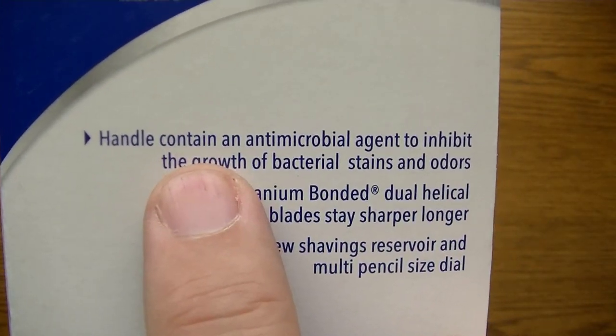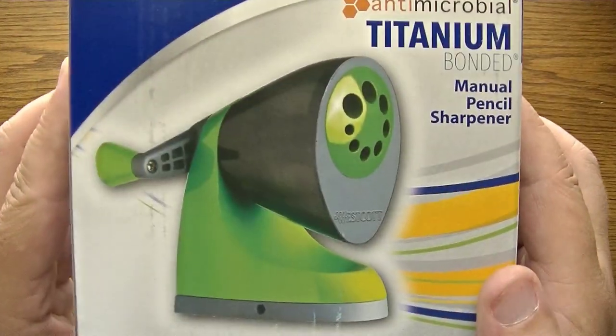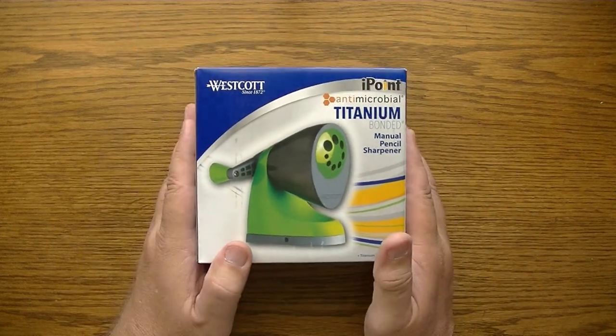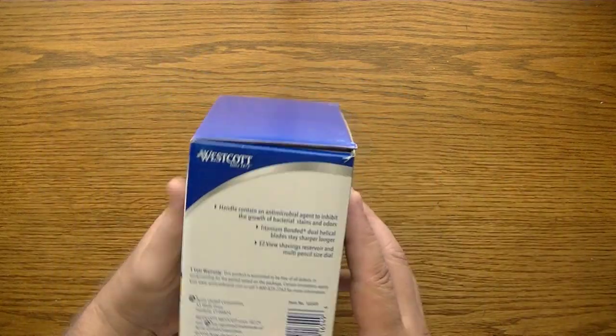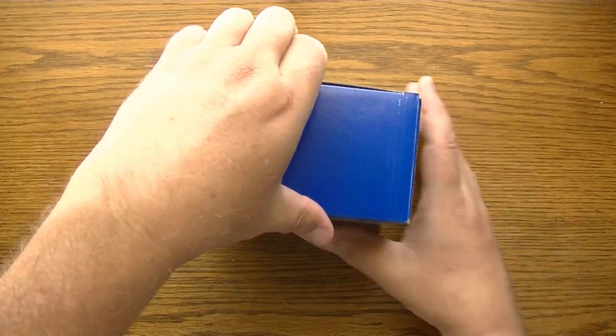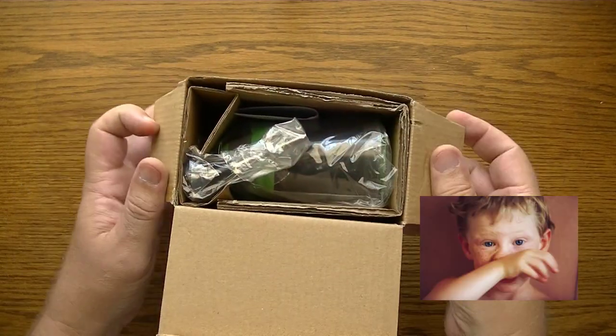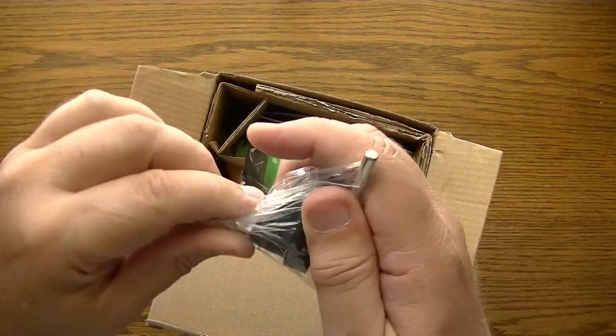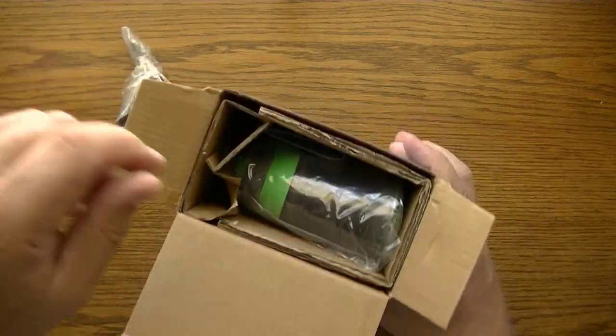It tells us the handle contains an antimicrobial agent to inhibit the growth of bacterial stains and odors, titanium bonded dual helical blade stay sharper longer, an easy view shavings reservoir and multi pencil size dial. I imagine something like this antimicrobial agent on the handle is a good idea in a school or in an office environment where many people are sharing the same sharpener. In my case I would be the only one using it, but pretty good idea for a school with little kids wiping their nose and wanting to touch everything.